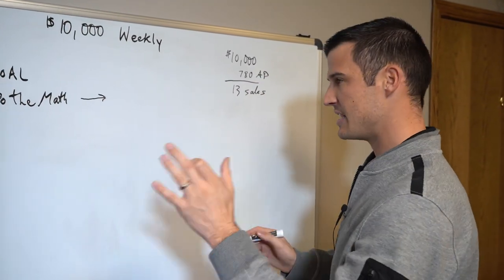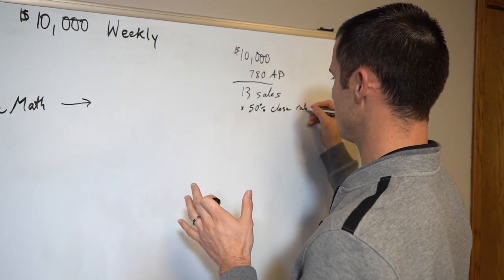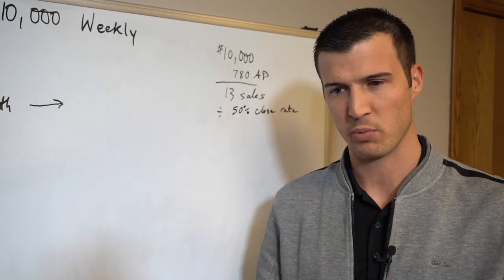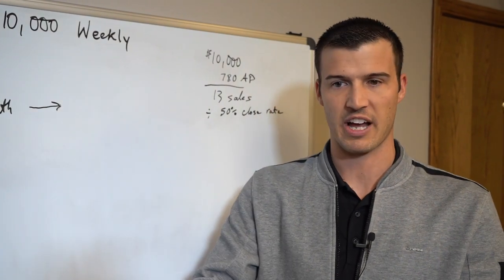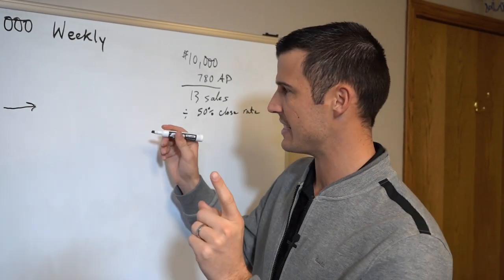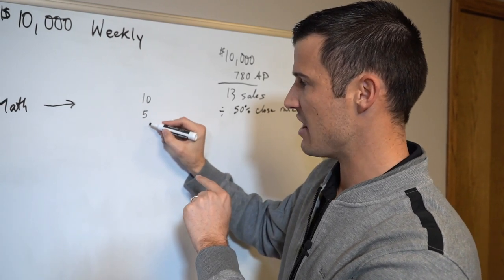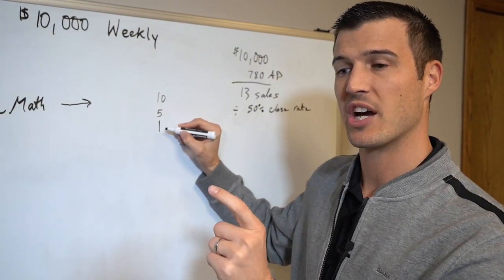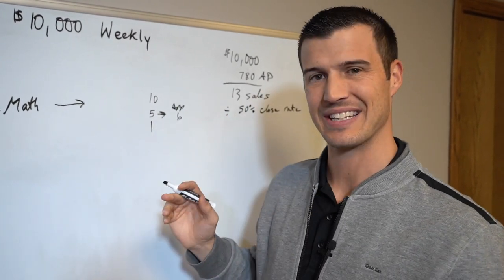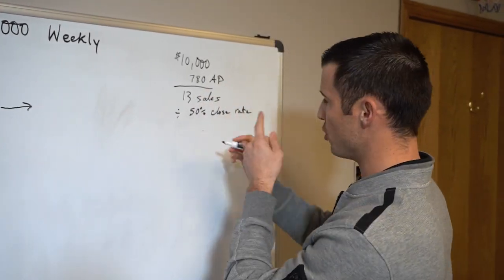13 sales. Now let's just say you're at a 50% close rate, so you would actually divide that to come up with a bigger number. 50% close rate which means if you sit with two people you'll close one, if you sit with 10 you'll close five. Now what we're not accounting for that also happens is if you sit with ten people and you sell five and one of the five was actually a couple, so it's a double sell, then your app count ends up being six. We're not taking that into account but that is part of it.